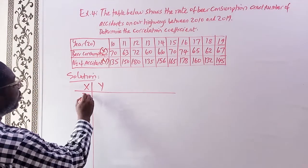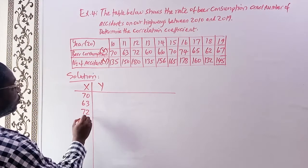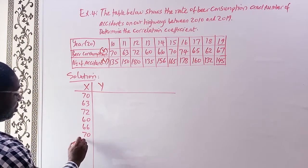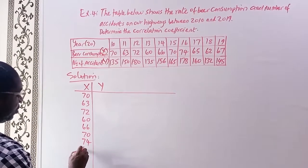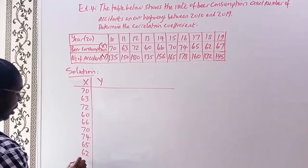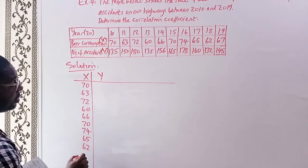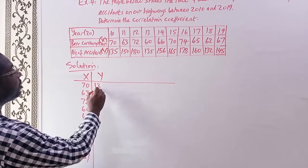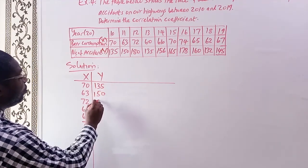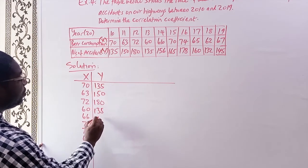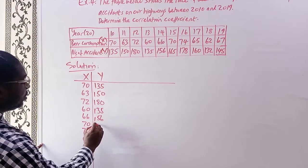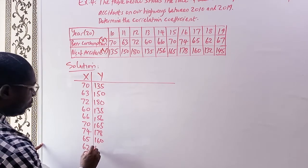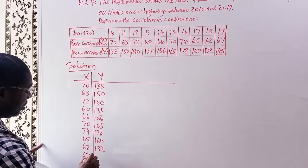Now putting in our figures. Our X values are: 70, 60, 63, 72, 60, 66, 70, 74, 65, 62 — and then we also have 67. Our Y values — the number of accidents — are: 135, 150, 180, 135, 156, 165, 178, 160, 132, and 145. Our task is to find the correlation, its direction, how strong it is, and whether it is positive or inverse.